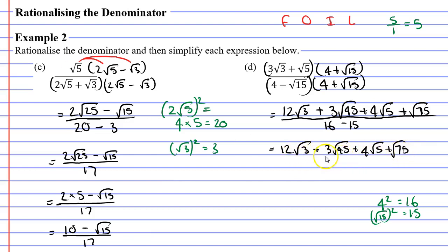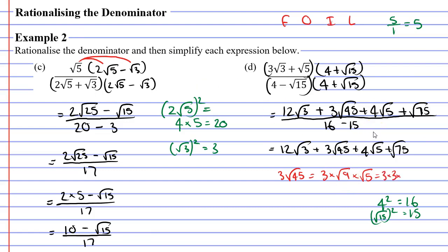Let's focus on 3 root 45. I know that 9 times 5 is 45, so I can rewrite this as 3 times root 9 times root 5 — because root 9 times root 5 is just root 45. Now the square root of 9 is 3, so I can rewrite this as 3 times 3 times root 5. And 3 times 3 is 9, so we get 9 root 5.